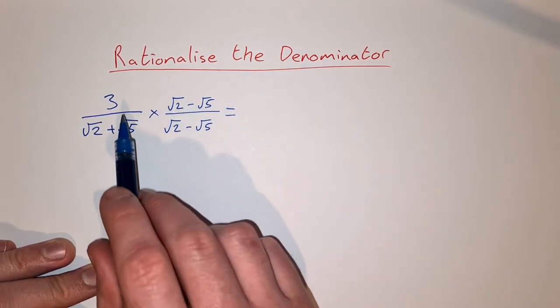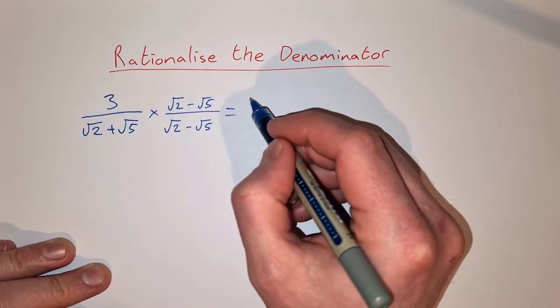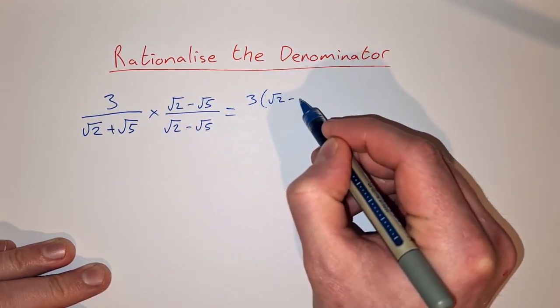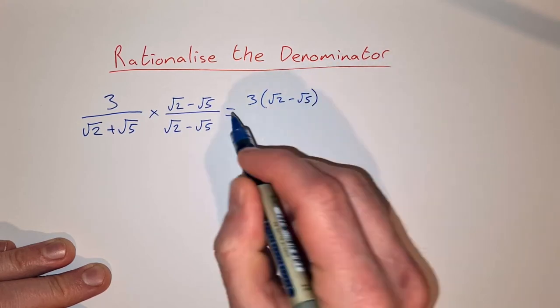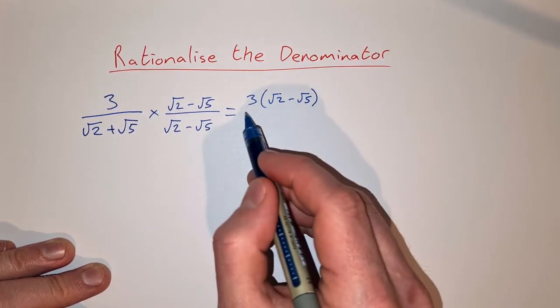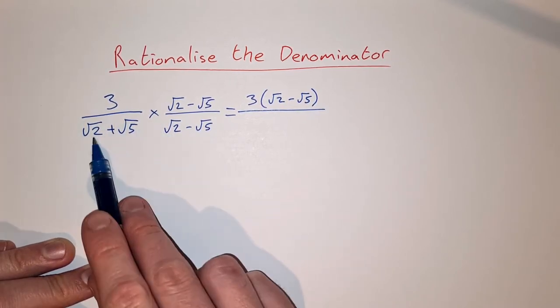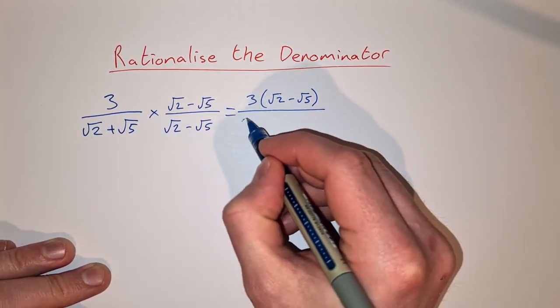So what do we get when we do that? On the top I'm just going to write it as 3 times root 2 minus root 5. We can multiply that out in a minute if we need to. On the bottom then it's root 2 by root 2 is 2.